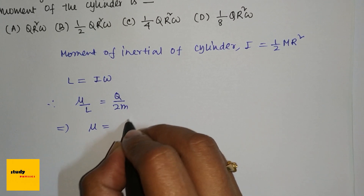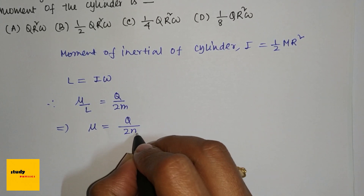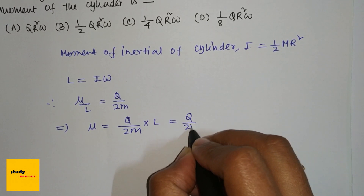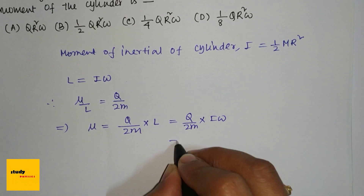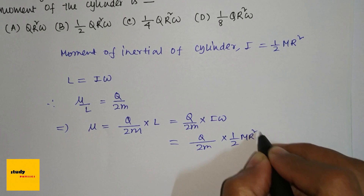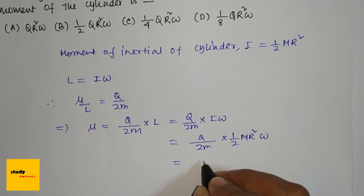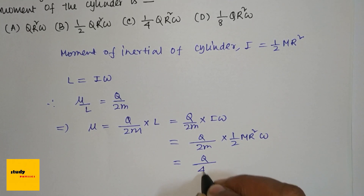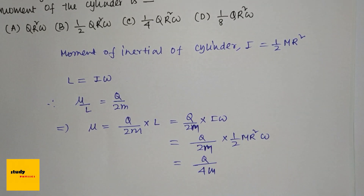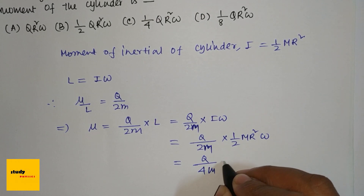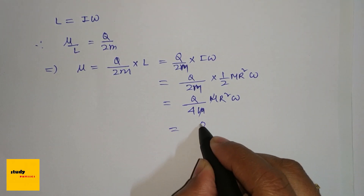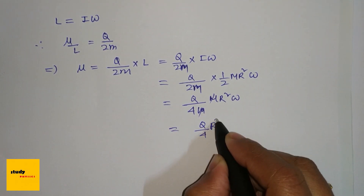So μ = q/2m × L = q/2m × Iω. Substituting I = ½mr², we get μ = q/2m × ½mr²ω = qr²ω/4m. The mass m cancels out, giving the magnetic moment as qr²ω/4.